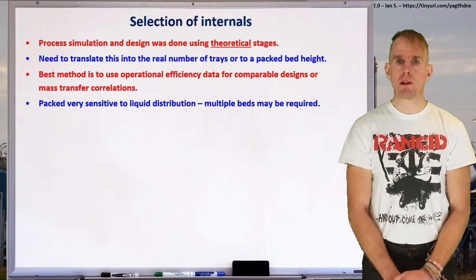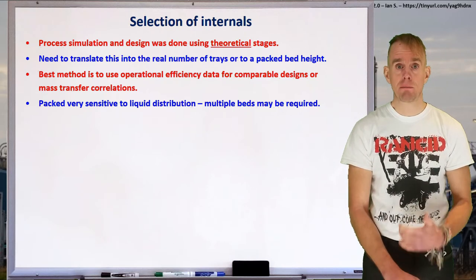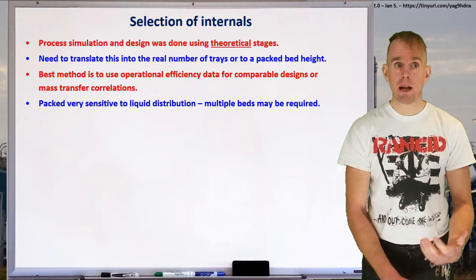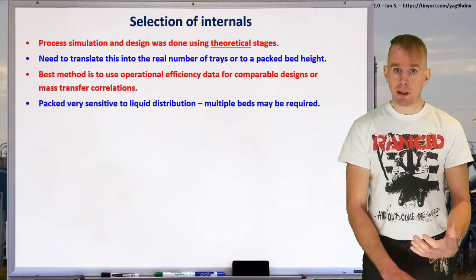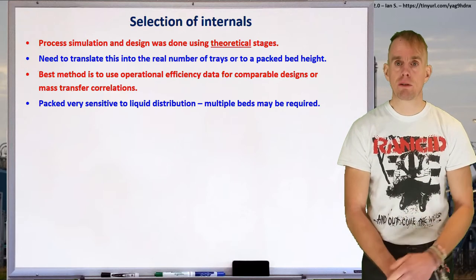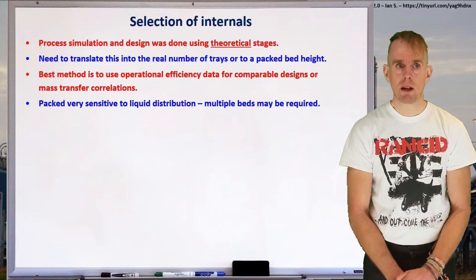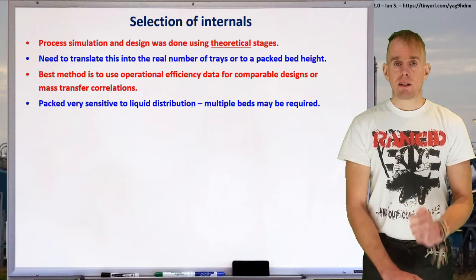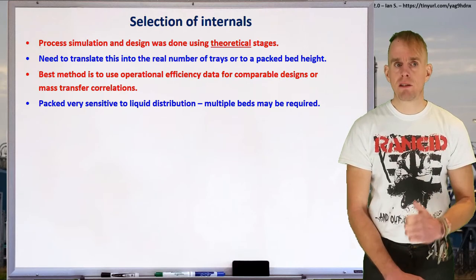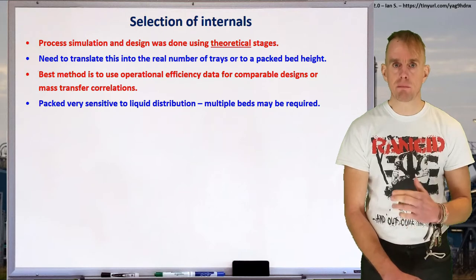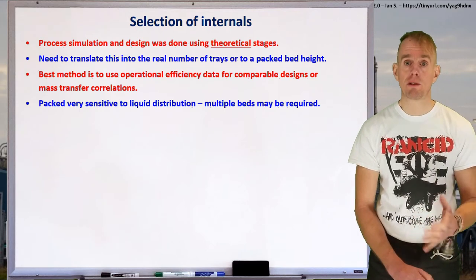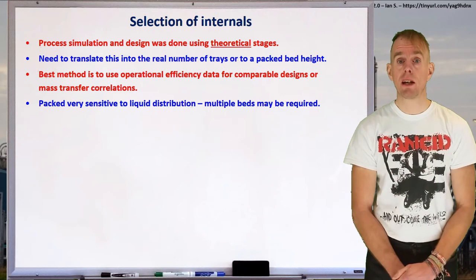We can do this conversion either with tray efficiency data, or using the height equivalent of a theoretical plate — the HETP — which is what you use for packing. The best way of doing this conversion is to use operational efficiency data for a comparable system. However, that may not be available, at which point you'll have to rely on mass transfer correlations or things like mercury vapor stage efficiencies. The thing to never forget is that packed columns are incredibly sensitive to liquid distribution, and multiple beds are usually required to overcome distribution problems.